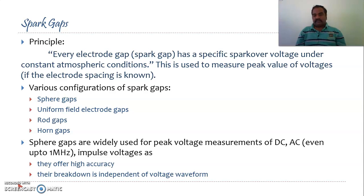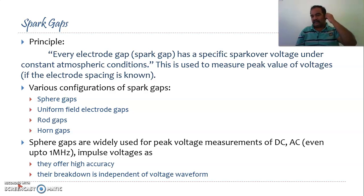Out of all these different electrode shapes, sphere gaps which employ spheres as electrodes are extensively used for peak measurement of DC, AC, and impulse voltages. This is because they offer very high accuracy and the breakdown of the sphere gaps is independent of the voltage waveform. That is why sphere gaps are widely used over uniform field electrode gaps and rod gaps.